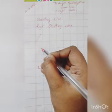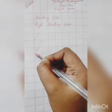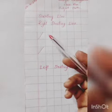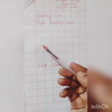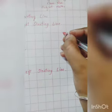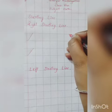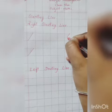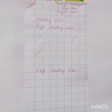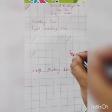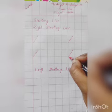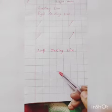Bring it down to the bottom like this. This is a right slanting line — bend towards right. One more time from the top of the column to the bottom. Once again from the top to the bottom and bend towards right. Next, left slanting line.